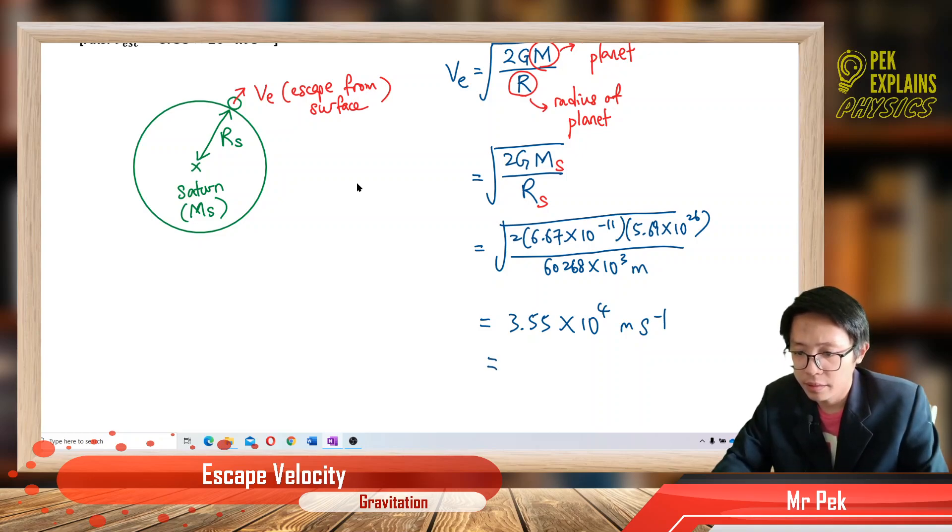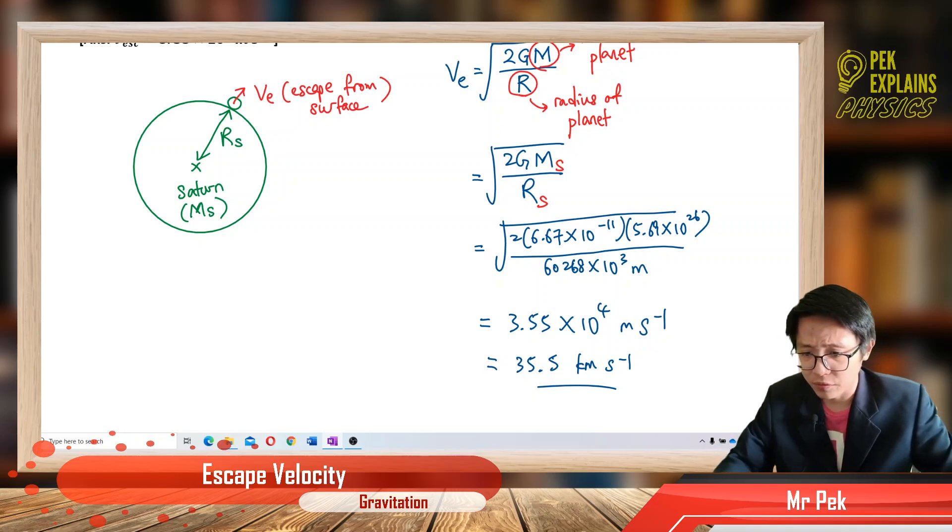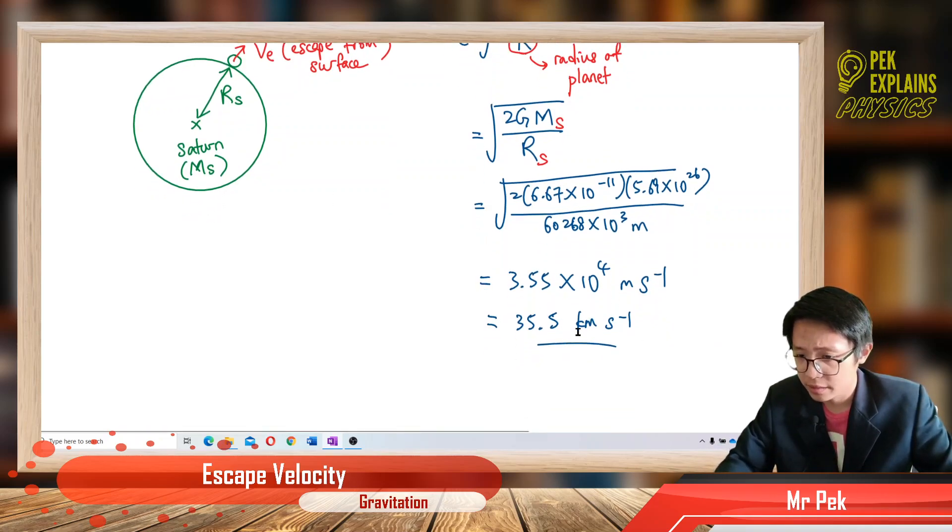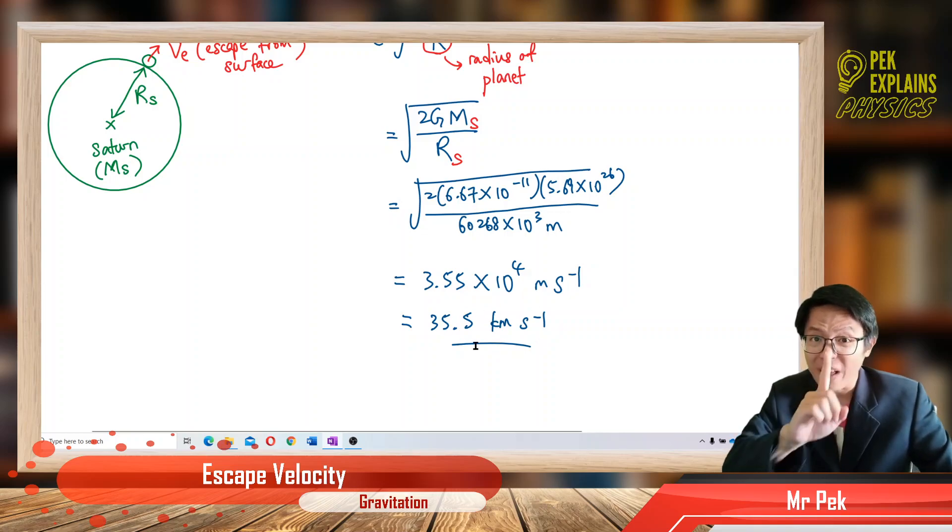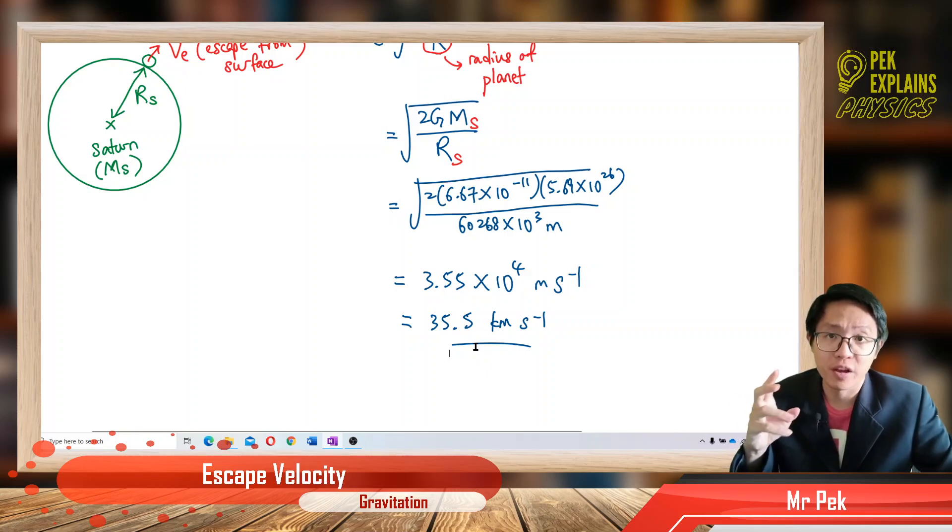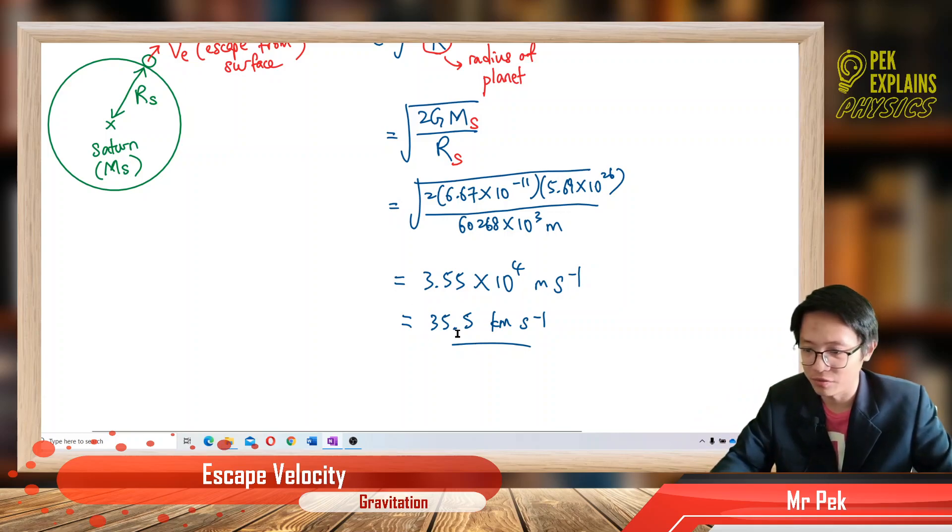That means, it is actually 35.5 kilometer in one second. Wow. So, that means, if you want to escape from the planet Saturn, you need to achieve this escape velocity, which is in one second, you need to travel 35.5 kilometer. This is very, very fast.